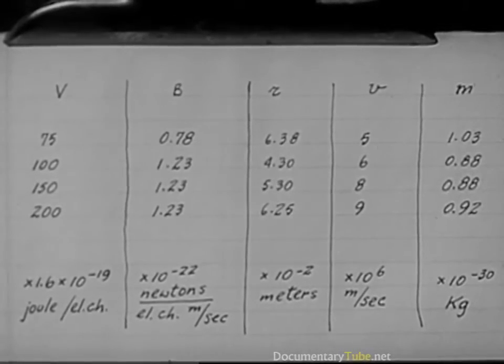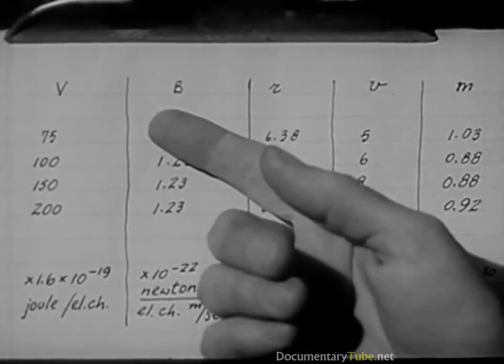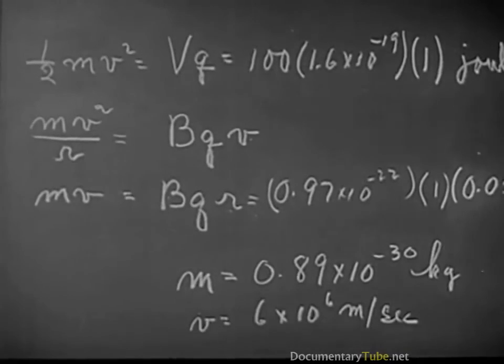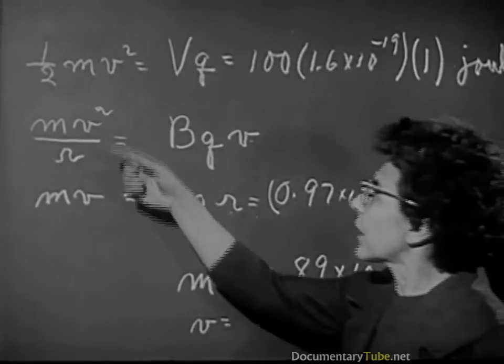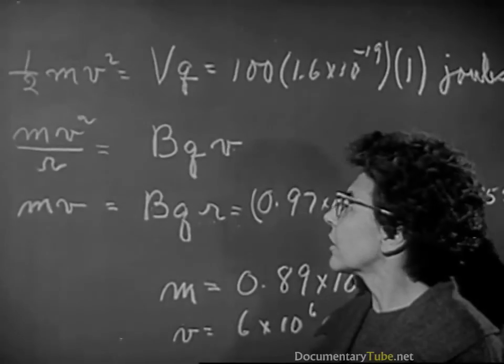We can also check very easily how the radius of the electron beam depends on the voltage and current. By increasing the voltage, and thus the energy of the electrons, we make the circle larger. Increasing the field makes it smaller. In fact, if you want to do a little algebra, you can find out from these two equations exactly how r should vary with V and B.